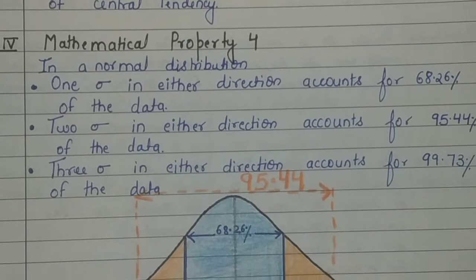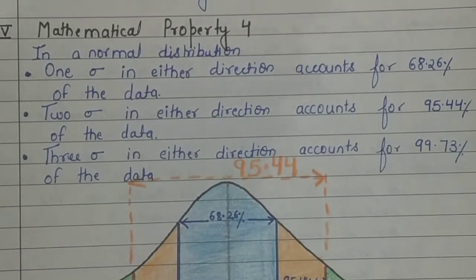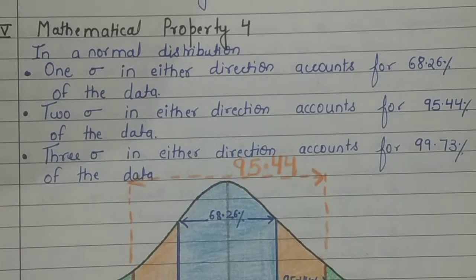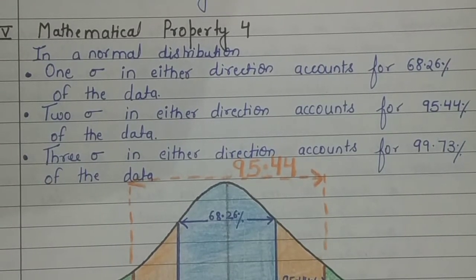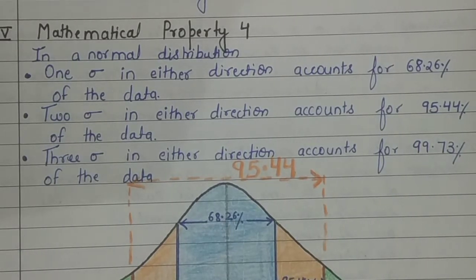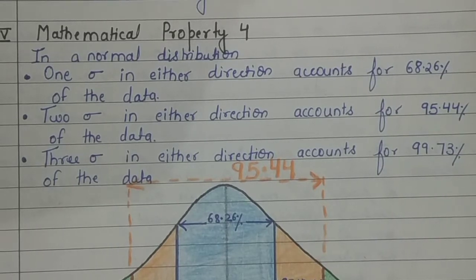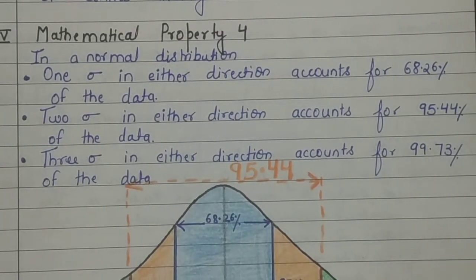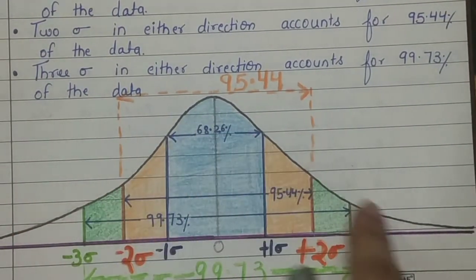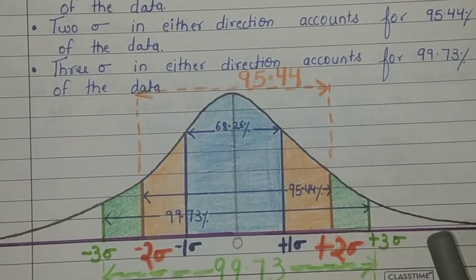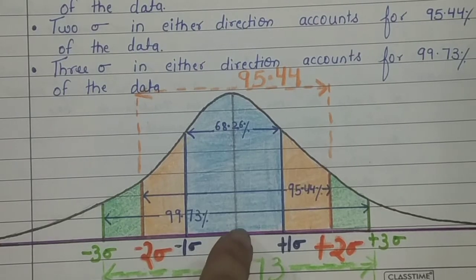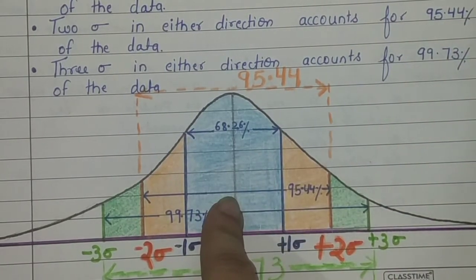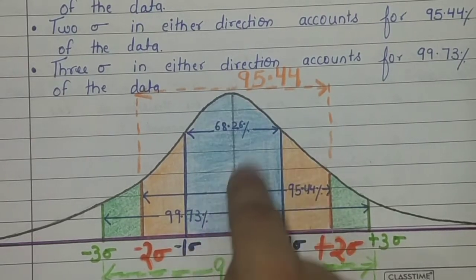Mathematical Property 4: If we talk about a normal distribution curve — which is a bell-shaped curve, symmetrical about the center, where the left-hand side and right-hand side are mirror images of each other — the area under the normal distribution curve is equal to one. In this curve, if we go one standard deviation below and one standard deviation above the mean, the area in between (shown in sky blue) represents 68.26% of the total data.